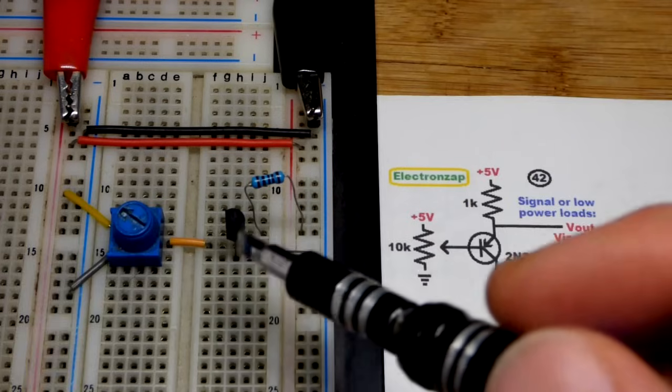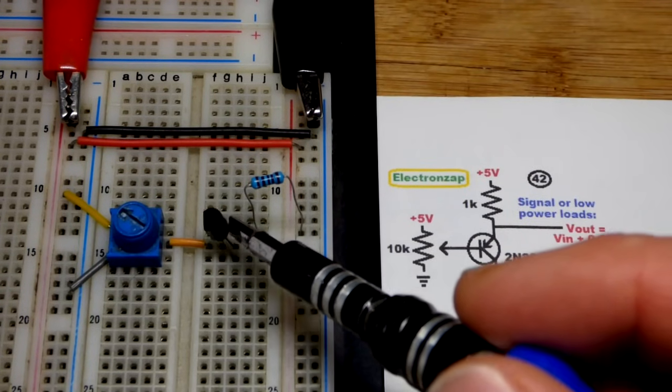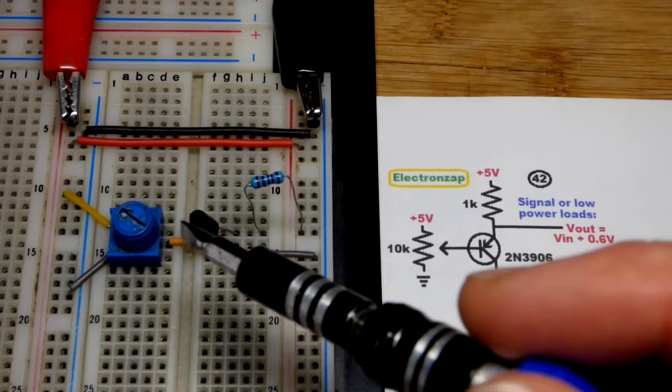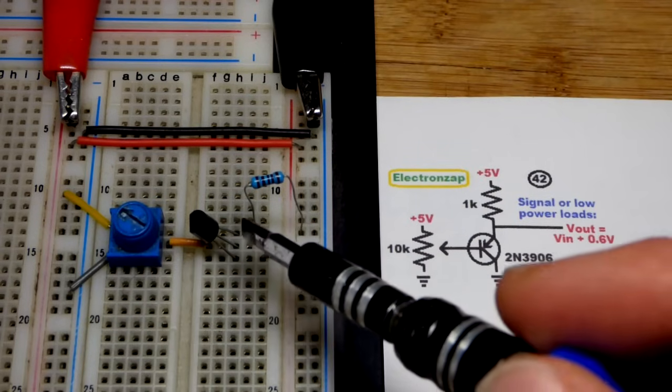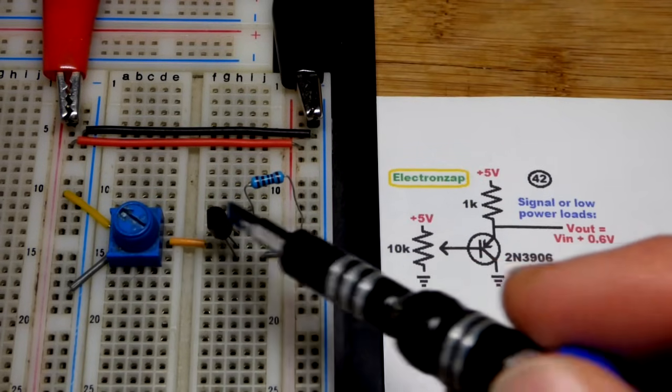So now we got the emitter. The pin layout is the same. I'm using a 2N3906 for the PNP right here. Emitter's to the left, base in the middle, collector to the right. You put the flat side to the left then the emitter's on top, base in the middle, and the collector on the bottom.